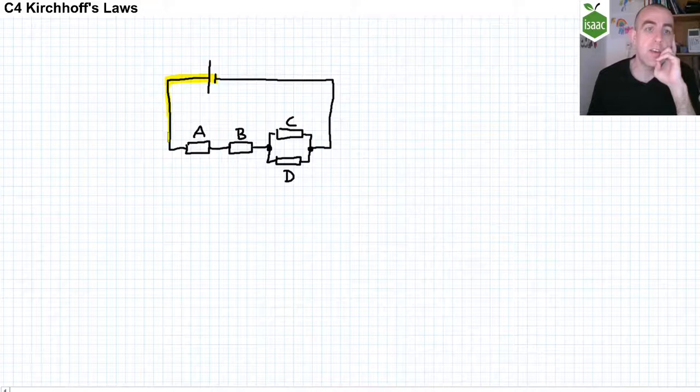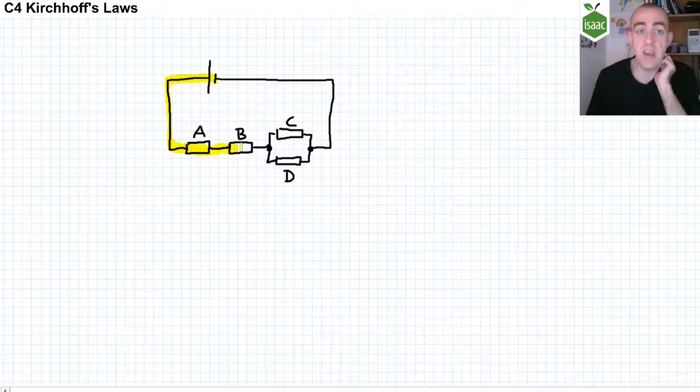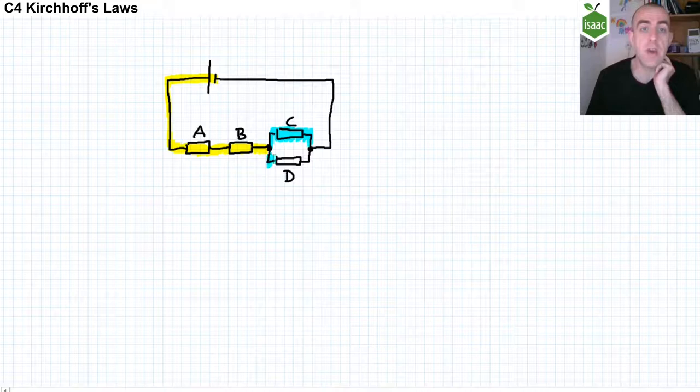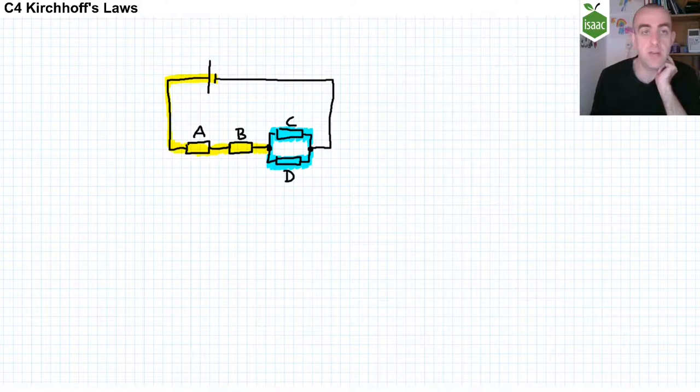At this point there is then a junction, and so the current through C plus the current through D has to be the same as the current through A, which is also the same as the current through B. The current through C plus the current through D is equal to the current through B. And then when these currents are recombined, we are back to that original current in this part of the circuit I'm highlighting here.